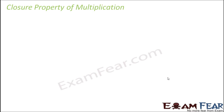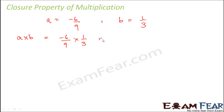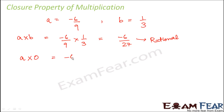Now let us look at the closure property of multiplication. Let a = −6/9 and b = 1/3. Then a × b = −6/9 × 1/3 = −6/27, which is again a rational number. Even if one number is 0: −6/9 × 0 = 0. Is 0 a rational number? Yes, because 0 = 0/1, which satisfies the format p/q. Therefore, the closure property of multiplication holds true for all rational numbers without any exception.